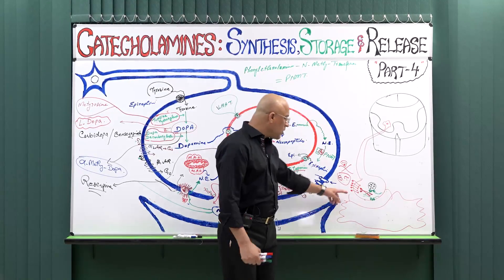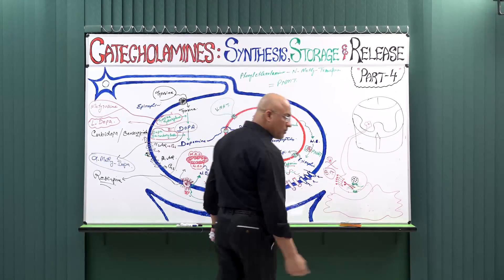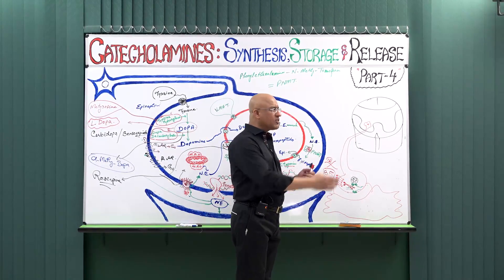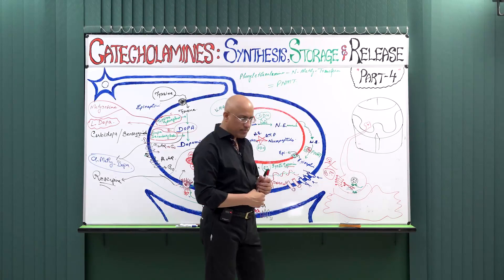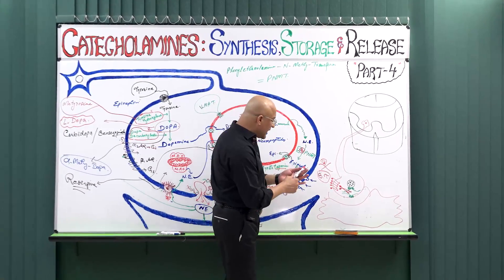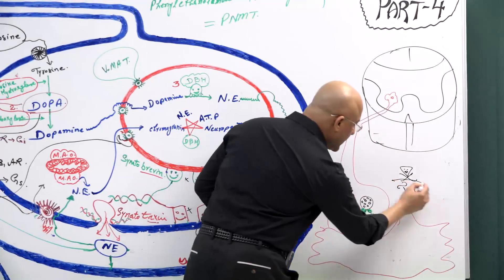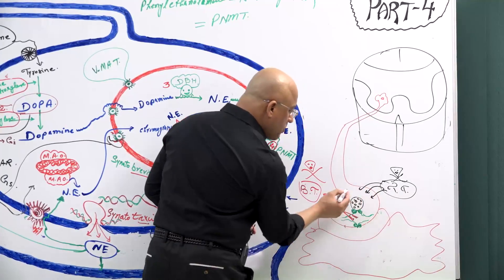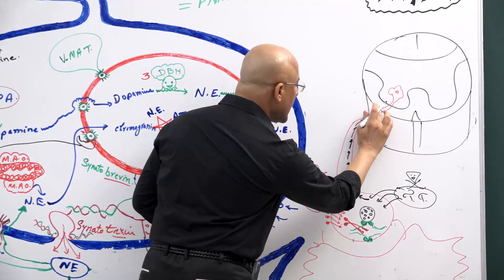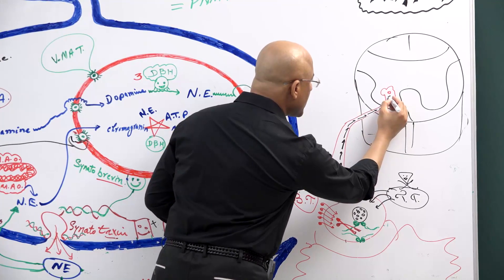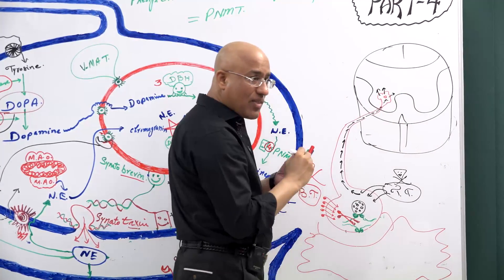Tetanus toxin is a little more tricky. Tetanus toxin is also taken up by these cholinergic nerve endings at the neuromuscular junction, but a part of it travels retrograde — upward — through the axoplasm over many days and reaches the spinal cord.